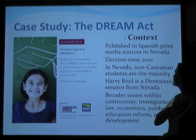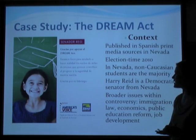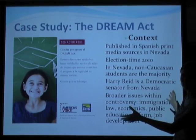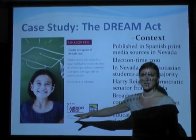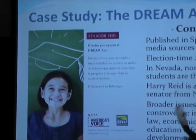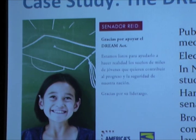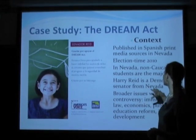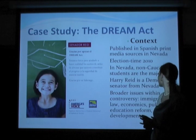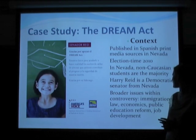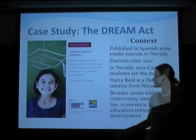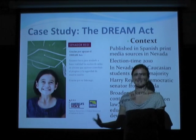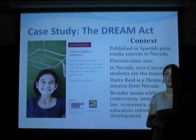This was an advertisement published in a Spanish print media source in Nevada during election time in 2010. There's a link that shows you where the advertisement was found, which you can use to do more research on your own. To give some cultural context: in Nevada, non-Caucasian students are the majority of the student population. Harry Reid is the senator to whom this letter in the advertisement is written, and he is a Democratic senator from Nevada who did support the DREAM Act. Broader issues within the controversy include immigration law, economics, public education reform, and job development, as you'll see when we analyze the different organizations that supported and published the piece.